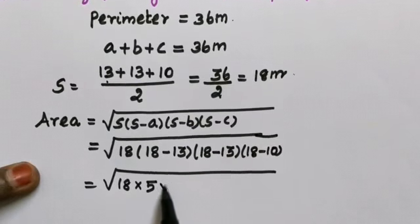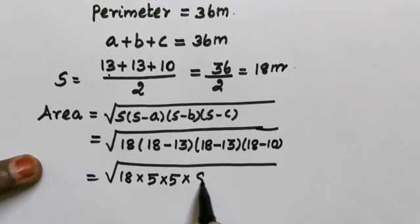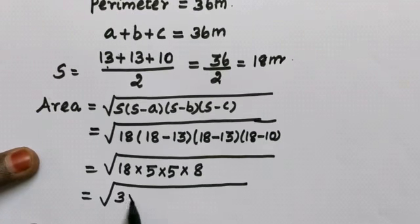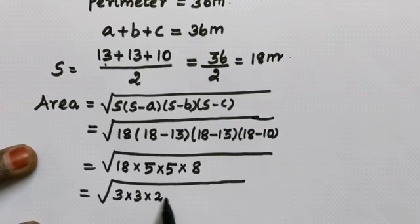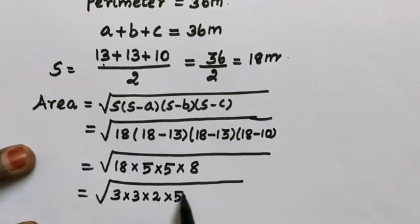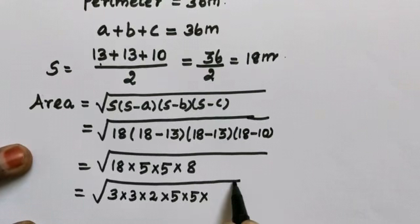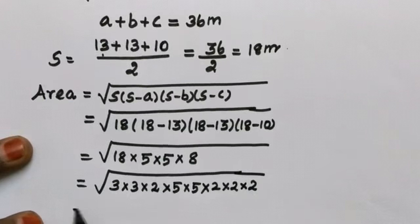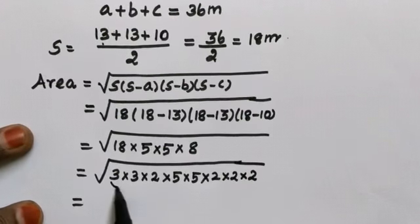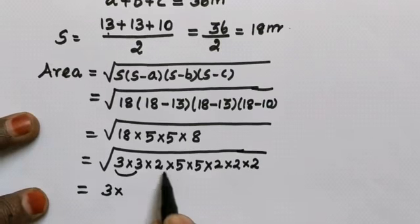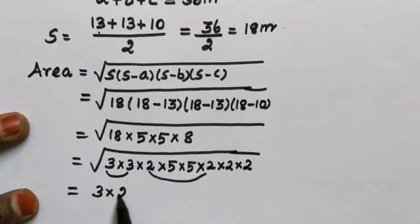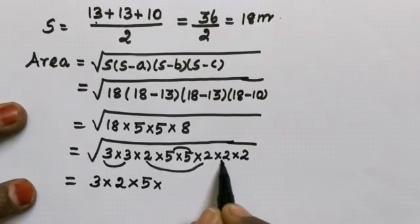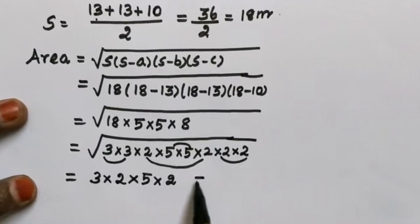Now the values: s minus a is 5, s minus b is 5, s minus c is 8. So we calculate: 18, then 3 nines are 9, 2 fives are 18, 2 fours are 8. Picking the values: s=18, (s-a)=5, (s-b)=5, (s-c)=8.